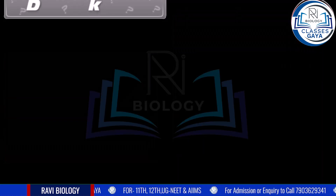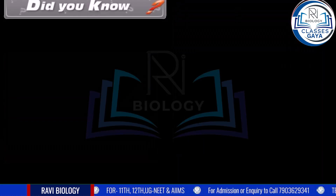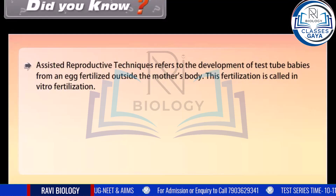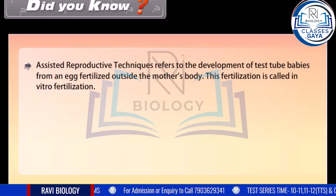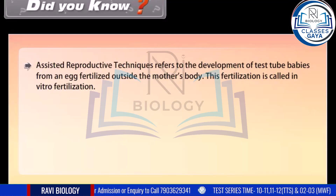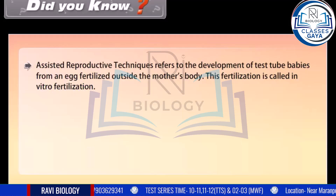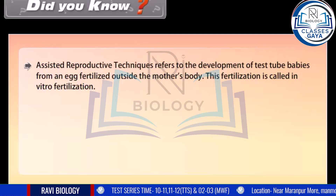Did you know? Assisted reproductive techniques refer to the development of test tube babies from an egg fertilized outside the mother's body. This fertilization is called in vitro fertilization.